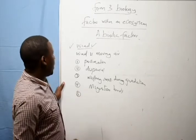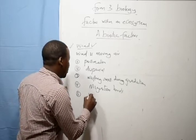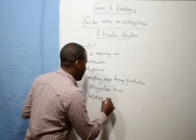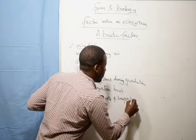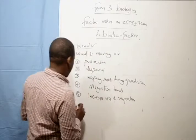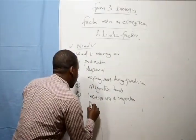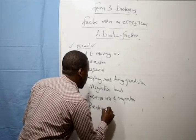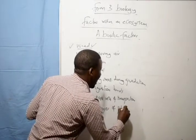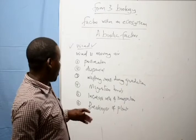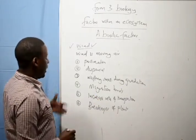Now some effects are negative. For example, wind increases transpiration, increases rate of transpiration. Wind also causes breakages, it causes breakages of plants. Wind such as hurricanes and the rest, when they occur they cause damage, extensive damage to plants and animals, even human settlements.